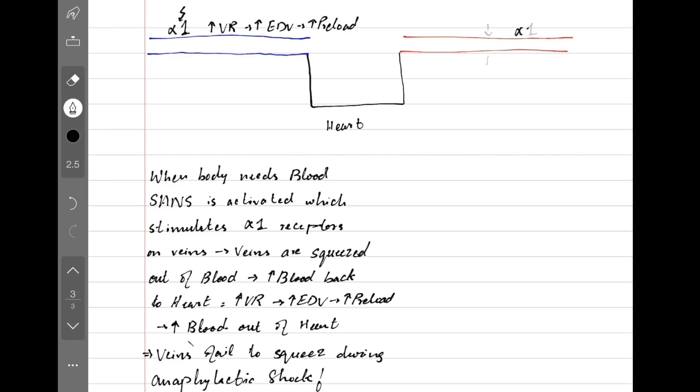But in case of arteries, when the alpha-1 receptors are activated, the arteries also constrict. But in that case, the constricted arteries result in increased resistance to blood flow inside the arteries. Fancy name of that thing is the afterload. So increasing the afterload means more work for the heart to pump out blood, which could be a bad thing as we see in hypertension.